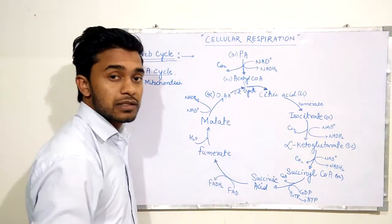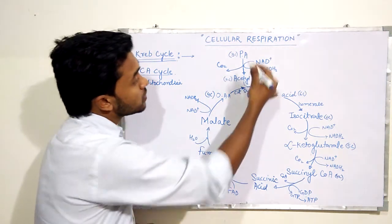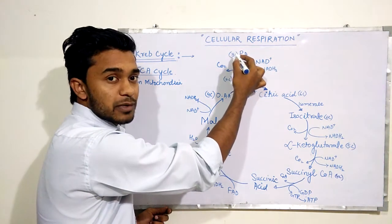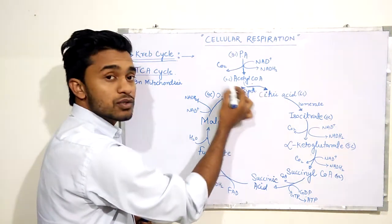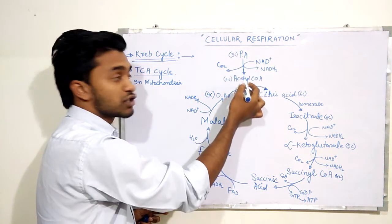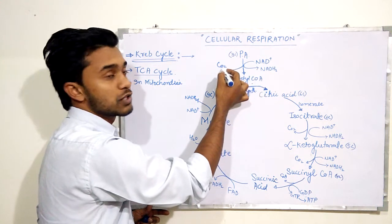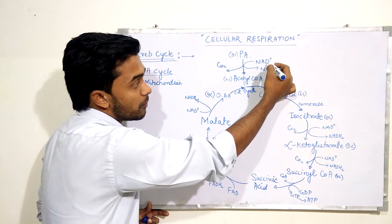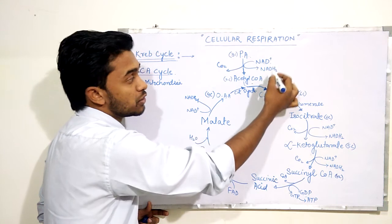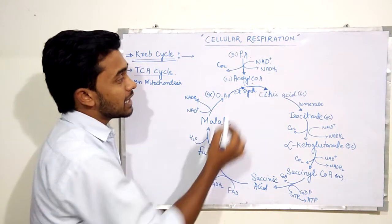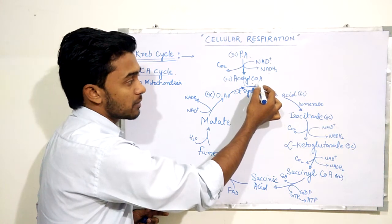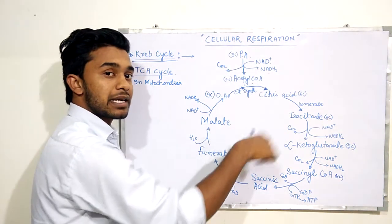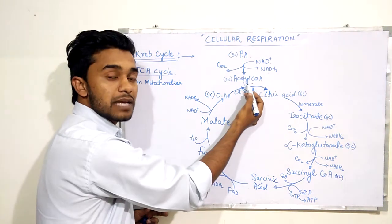We have a molecule of pyruvic acid, which is the end product of glycolysis. This pyruvic acid is converted to acetyl coenzyme A. Pyruvic acid is a three-carbon compound, but acetyl coenzyme A is a two-carbon compound. In this reaction, one carbon is released in the form of CO2. This reaction is a redox reaction, and the compound that is reduced is NAD into NADH2.